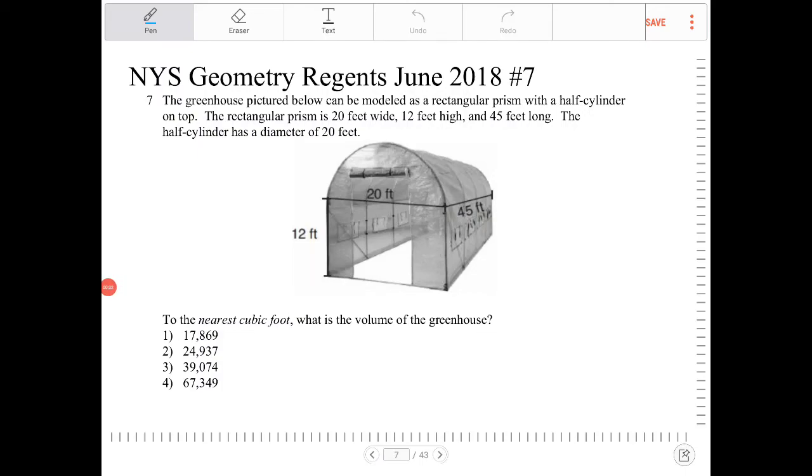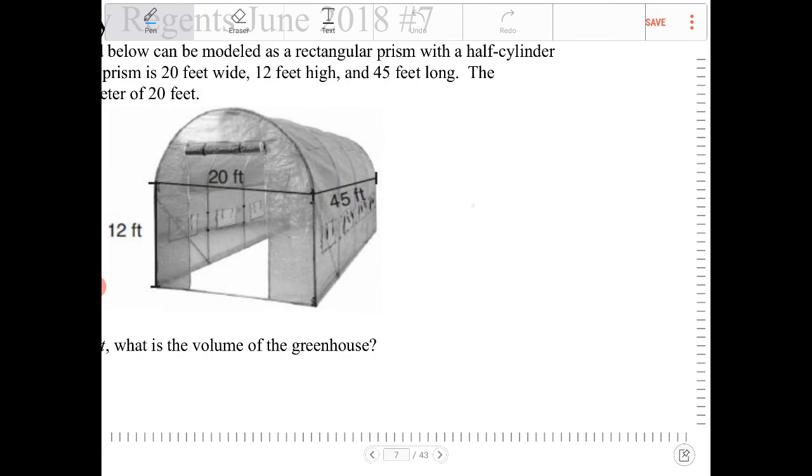The greenhouse pictured below can be modeled by a rectangular prism with a half-cylinder on top. The rectangular prism is 20 feet wide, 12 feet high, and 45 feet long. The half-cylinder has a diameter of 20 feet. To the nearest cubic foot, what is the volume of the greenhouse?